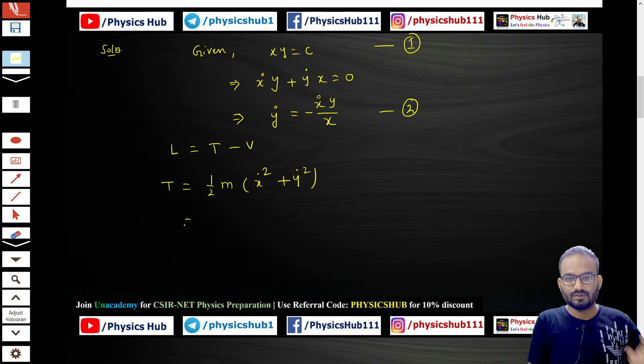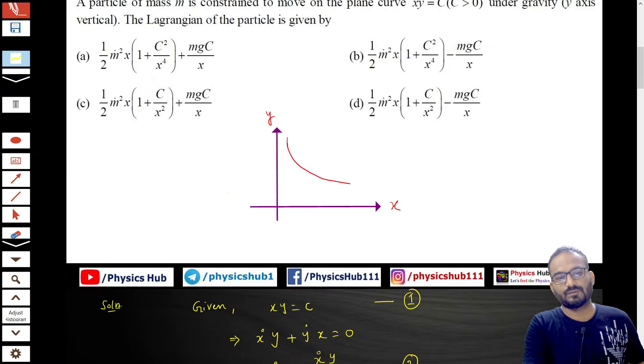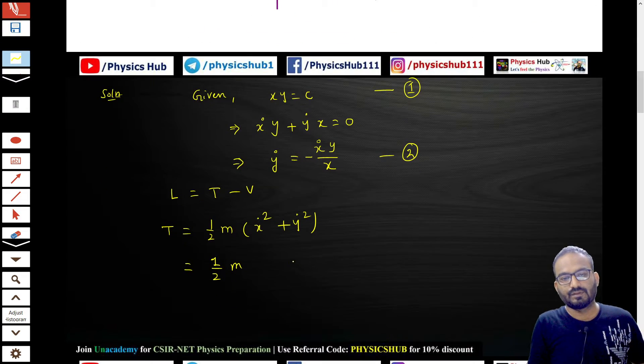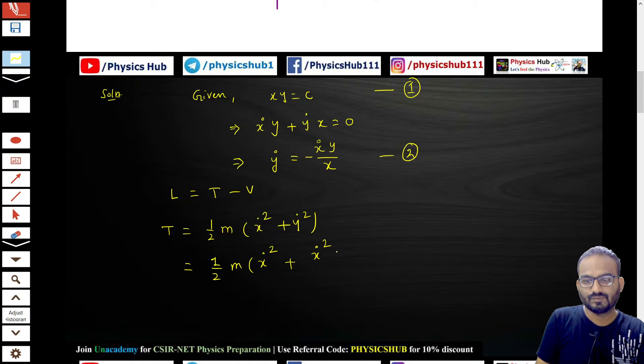Okay, so we are keeping it half m. Now look at the options. The options are given in terms of x, so we cannot keep y. So we are just replacing the y part. y-dot² will be x-dot²·y²/x². Okay, y²/x².